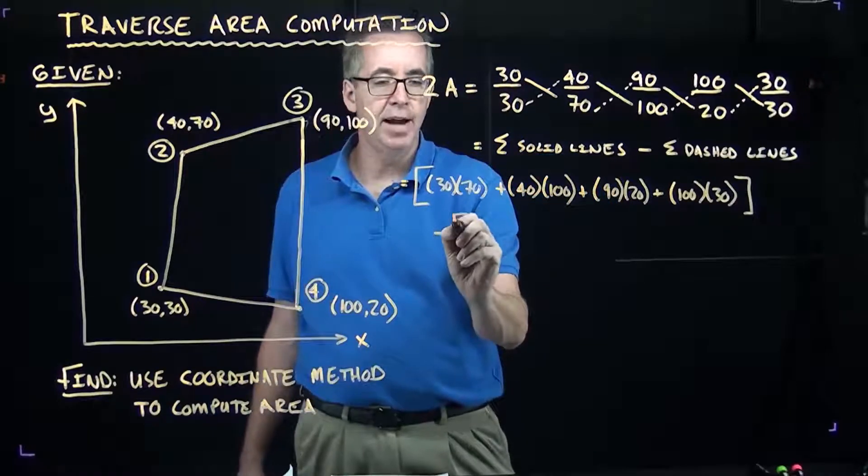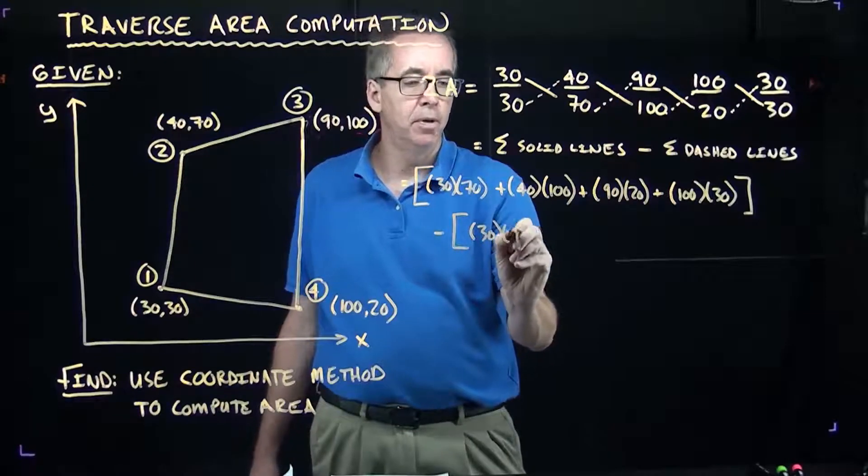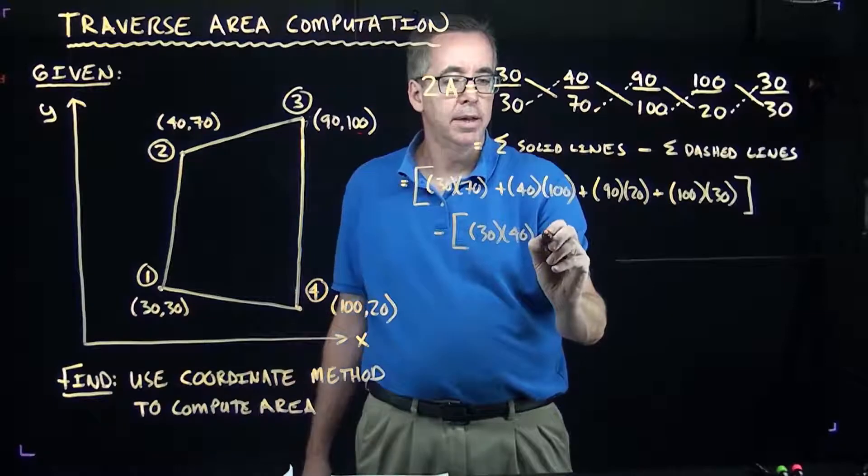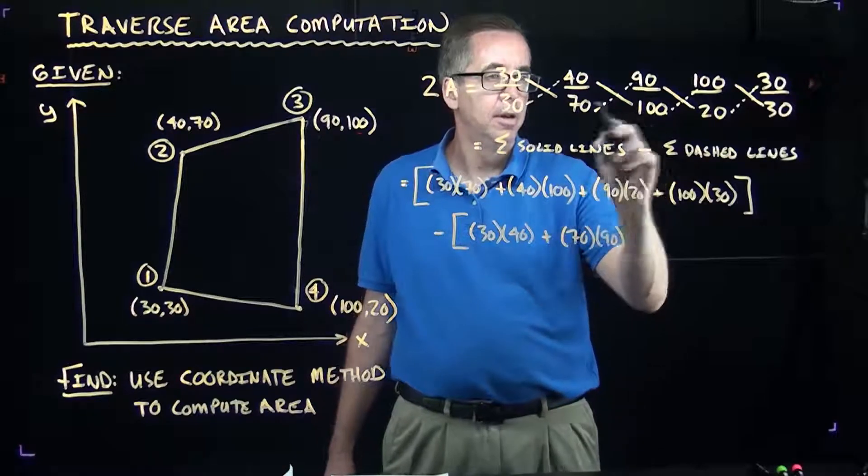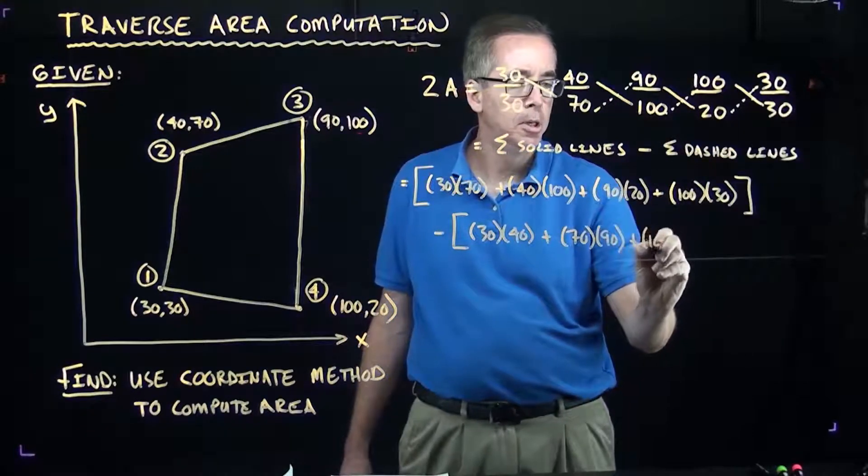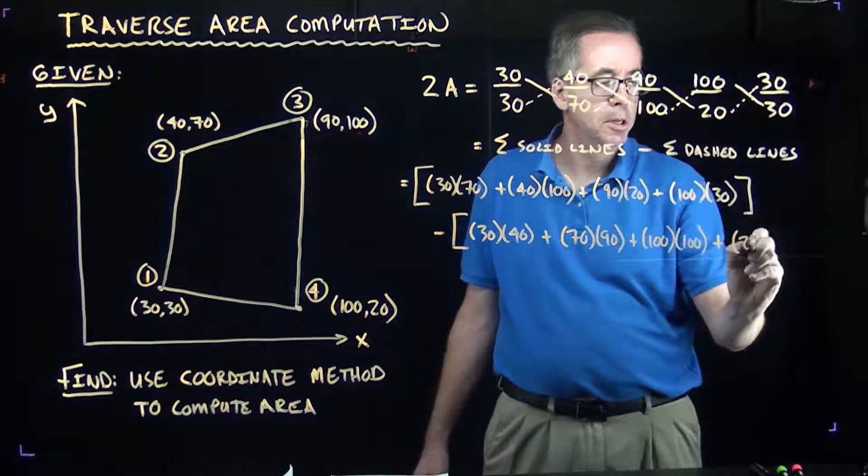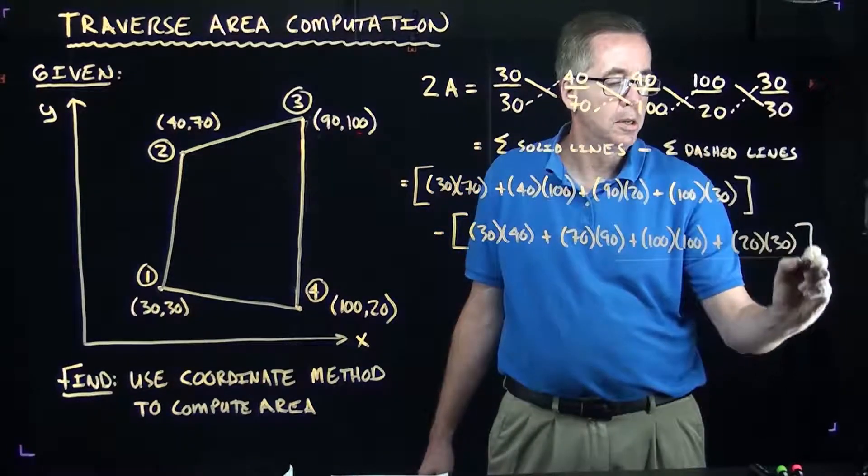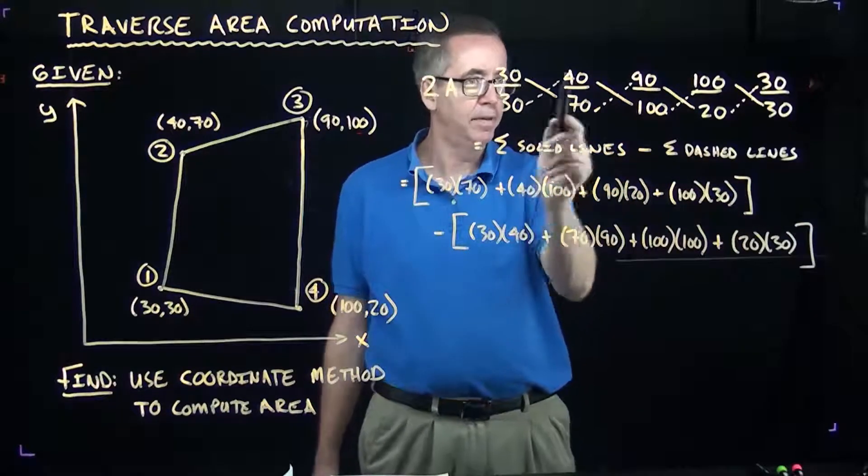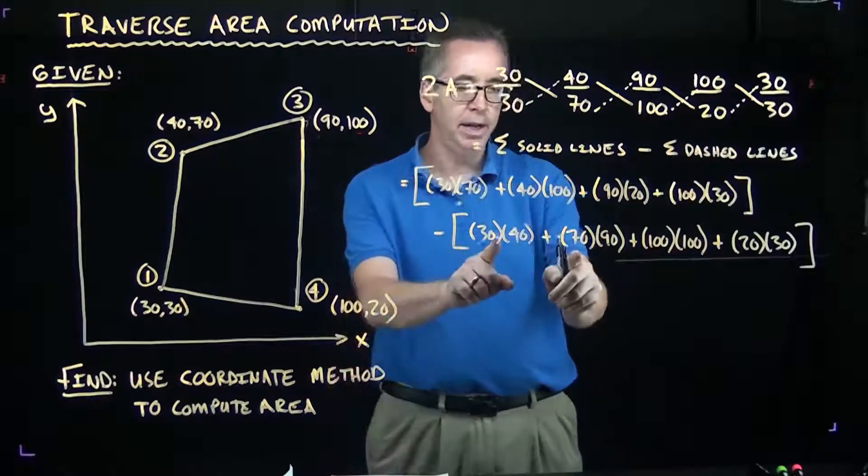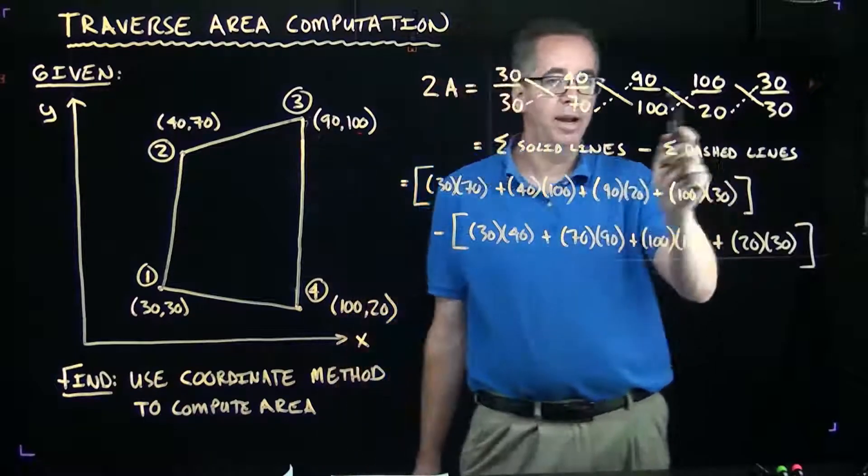I'm subtracting out all the dashed lines, which will start with 30 times 40. And then we have 70 times 90. And we have 100 times 100. And we have 20 times 30. So, everything in this square bracket represents the sum of the product of the solid lines. Everything here in the second bracket represents the sum of the product of all the dashed lines. I'm just making sure I have four for each one.